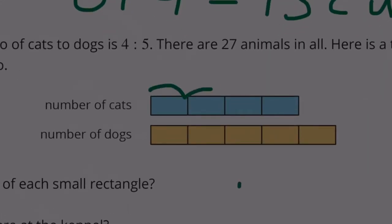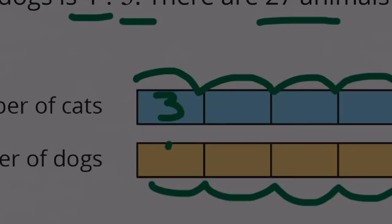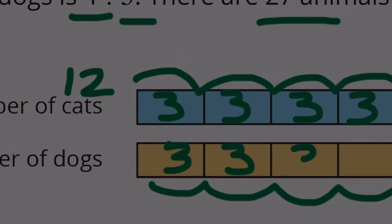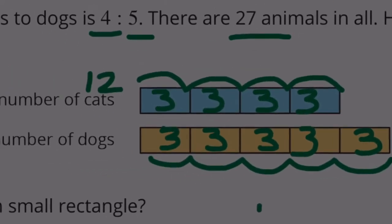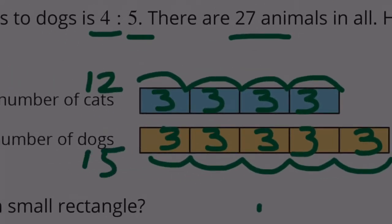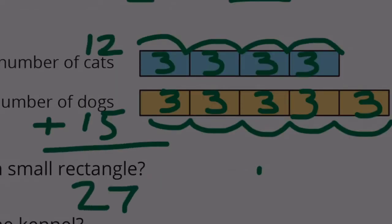1, 2, 3, 4 - that's 4 cats. 1, 2, 3, 4, 5 - that represents 5 dogs. But the total needs to be 27. Let's try 3. 3, 6, 9, 12 - pretend that there are 12 cats. 3, 6, 9, 12, 15 - let's pretend that there are 15 dogs. Let's add this up. 2 plus 5 is 7, 1 plus 1 is 2.